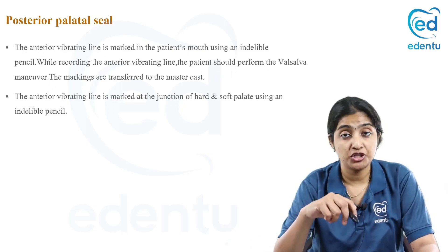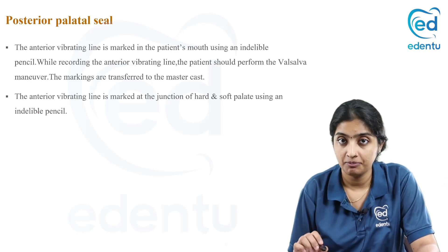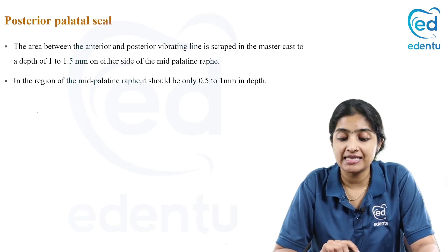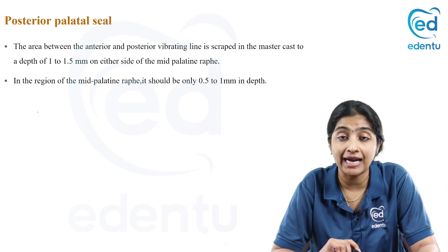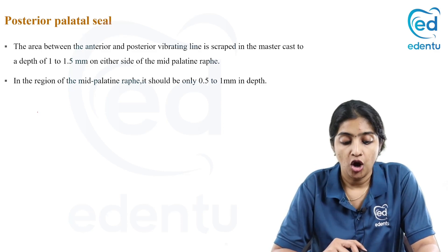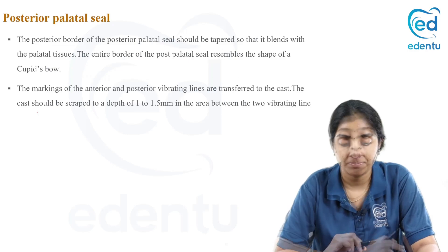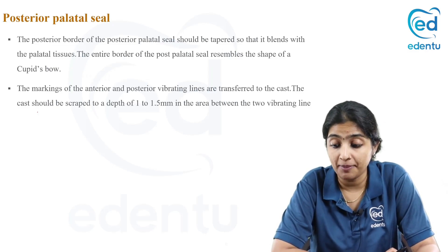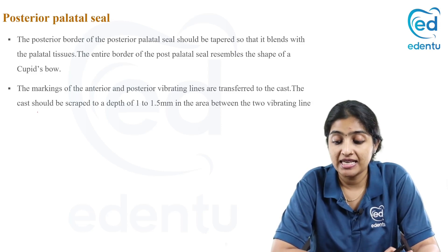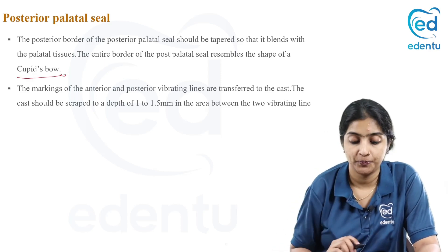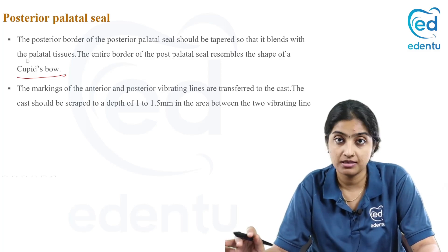The anterior vibrating line is marked at the junction of the hard and soft palate using a pencil. The area between the anterior and posterior vibrating lines is scraped in the master cast to a depth of about 1 to 1.5 mm on either side of the mid-palatine raphe. In the region of the mid-palatine raphe, it is scraped only about 0.5 to 1 mm in depth. The posterior border of the palatal seal should be tapered so that it blends with the palatal tissues. The entire border of the PPS resembles the shape of a cupid's bow. The markings of the anterior and posterior vibrating lines are transferred onto the cast and scraping is done.